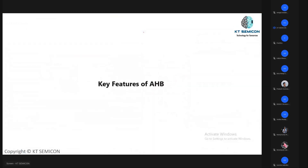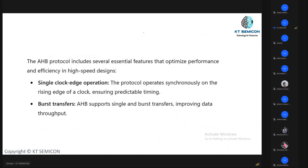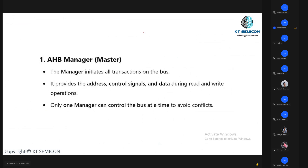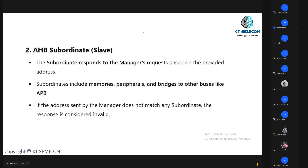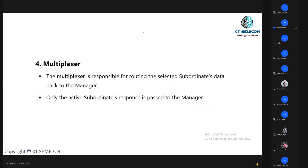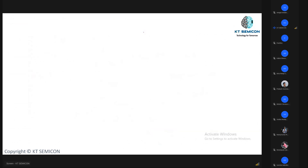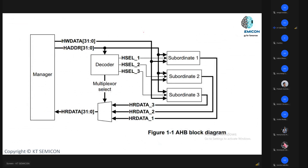Key features of AHB include single clock edge operation and burst transfers, which we will discuss in detail later. The system components include the AHB master, AHB subordinate or slave, a decoder, and a multiplexer. We are going to design these components and understand how the decoder works, how the multiplexer operates, and how the manager communicates with the subordinates.